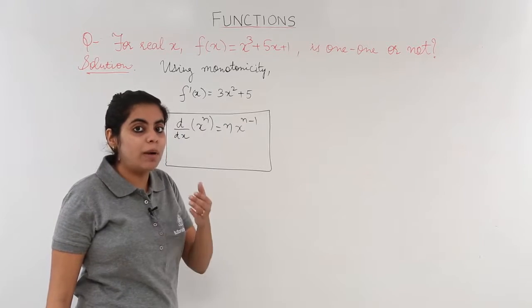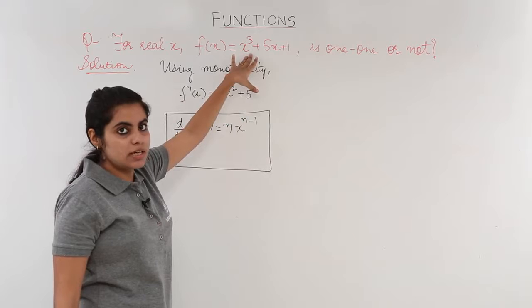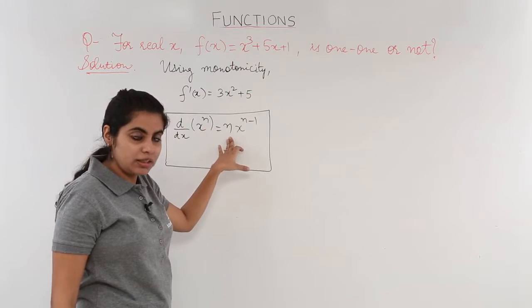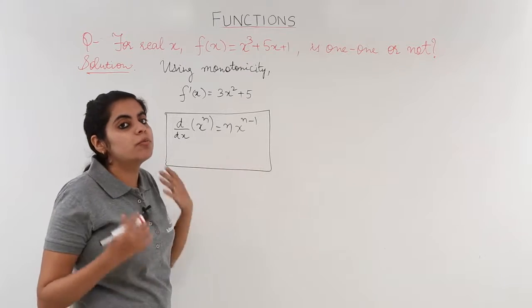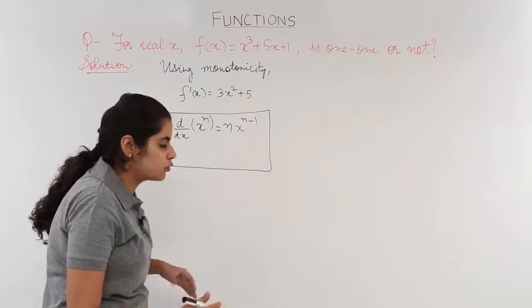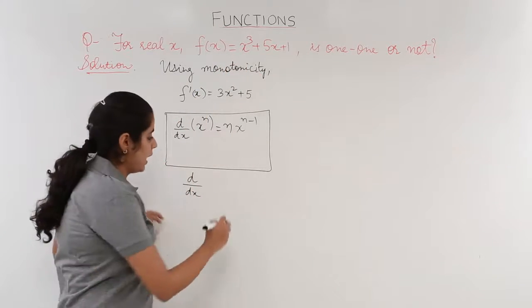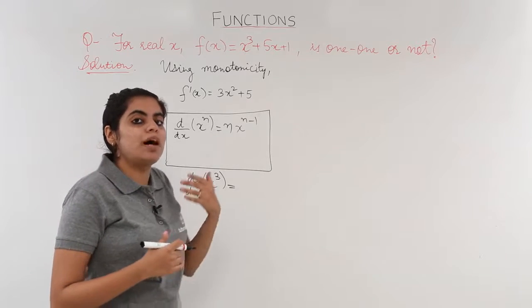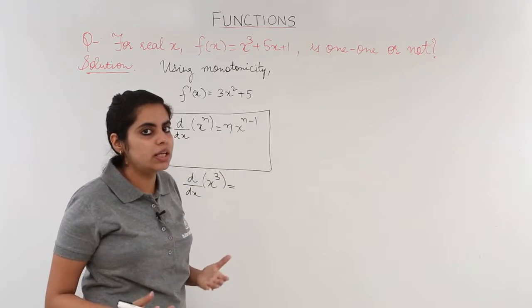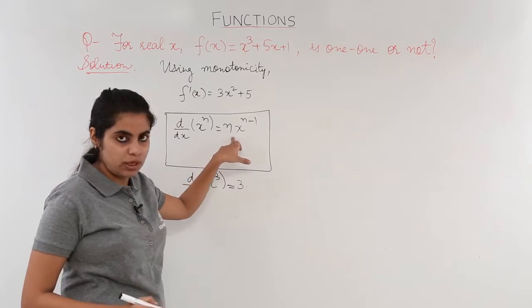That means the power will come, whatever the power is for this x³, that is 3, will come in the front. And then you multiply it by x^(n-1). Let's see how to do it. Suppose I have x³. Now x^n, that means n equals 3. Now 3 comes in the front as per this formula.